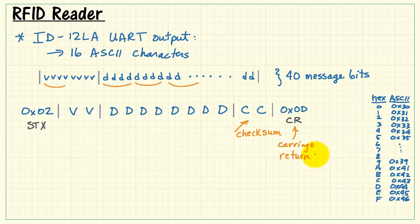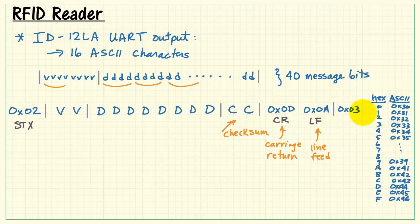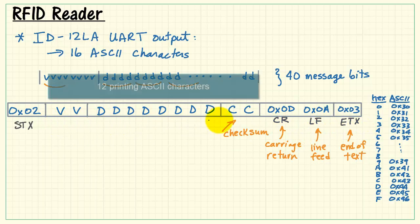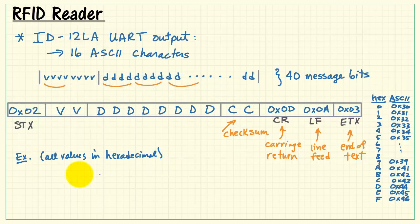Then, it follows it up with a carriage return, hexadecimal 0d, and then a line feed, hexadecimal 0a. And finally, it finishes the message by transmitting the ASCII end of text character, hexadecimal 03. Now, this is the complete set of 16 characters that are transmitted each time the tag is brought close to the reader. You'll see here that we have a total of 12 printing ASCII characters.